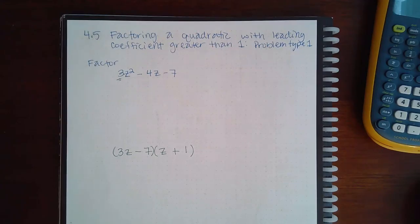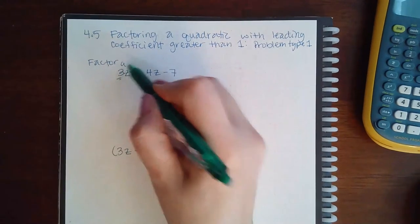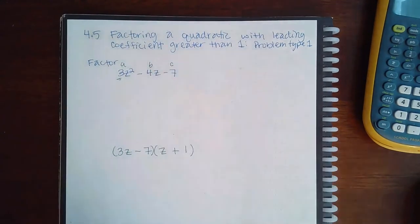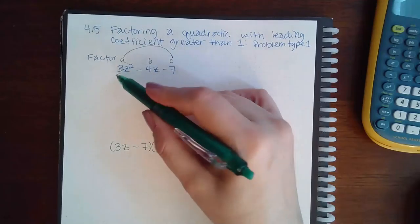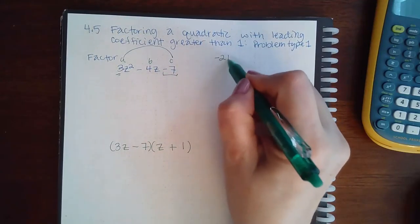So what you need to do is you need to do what we call the AC method. You think of this as a, this is b, and this is c. So what I'm going to do is I'm going to take a times c.